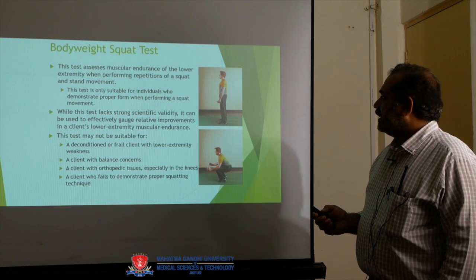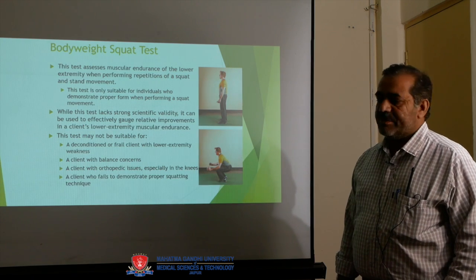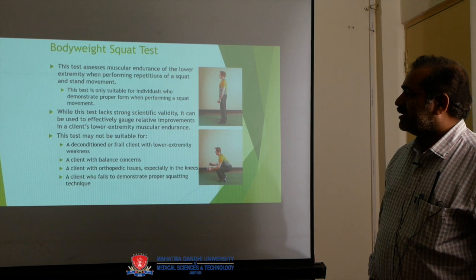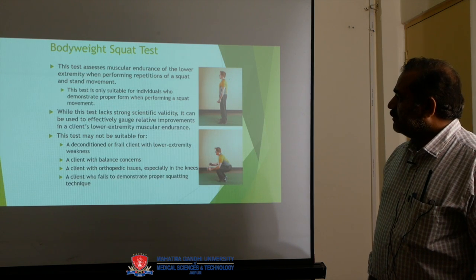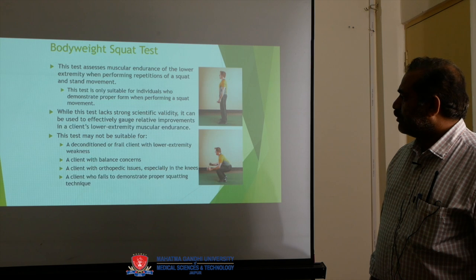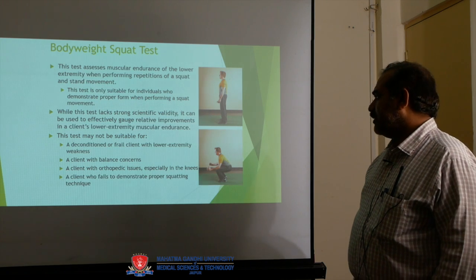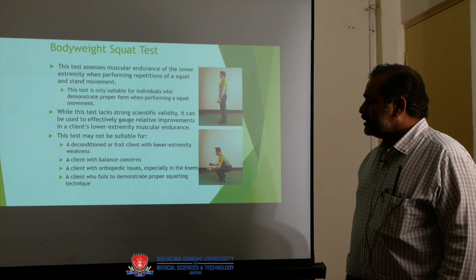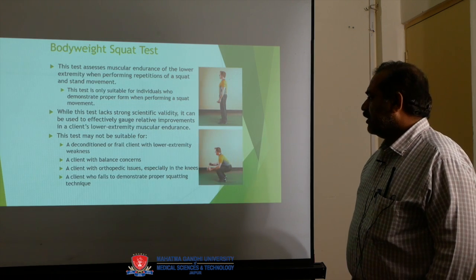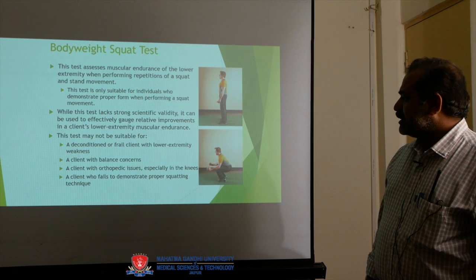The body weight squat test assesses muscular endurance of the lower extremity when performing repetitions of a squat-and-stand movement. This test is only suitable for individuals who demonstrate proper form when performing a squat movement. While this test lacks strong scientific validity, it can be used to effectively gauge relative improvements in a client's lower extremity muscular endurance. Contraindications include: a client with lower extremity weakness, a client with balance concerns, a client with orthopedic issues especially in the knees, and a client who fails to demonstrate proper squatting technique.